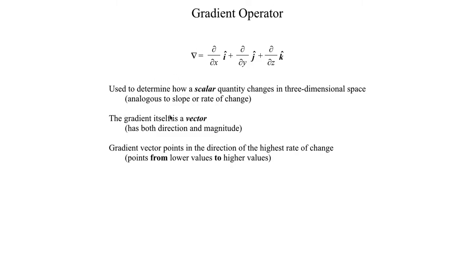One thing that's also very important to note is that the gradient itself is a vector quantity, so it has both magnitude and direction. By convention, the gradient vector — which is the vector you get by operating on a scalar function — points from lower values of your scalar function to higher values of your scalar function.